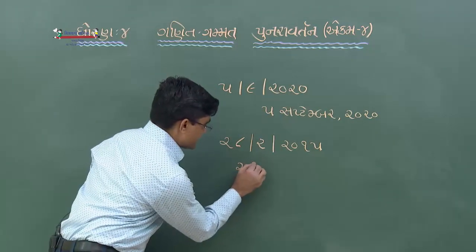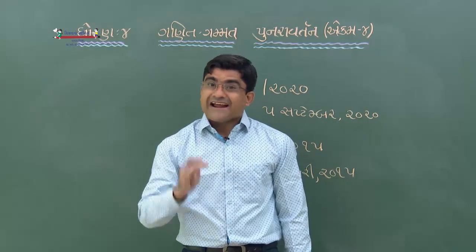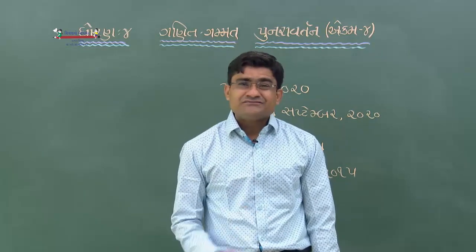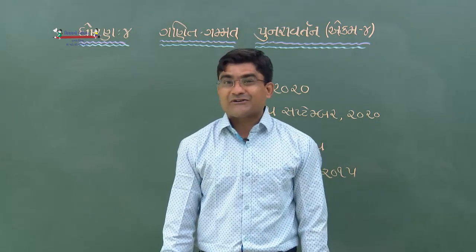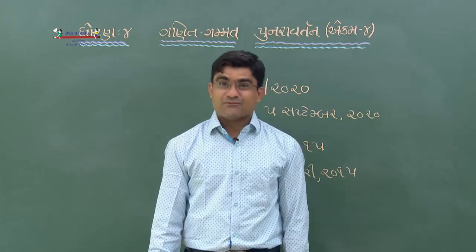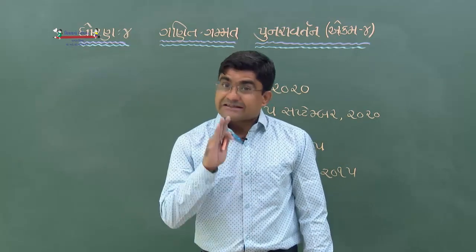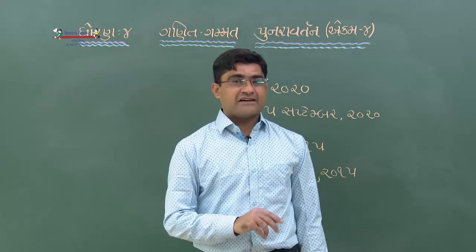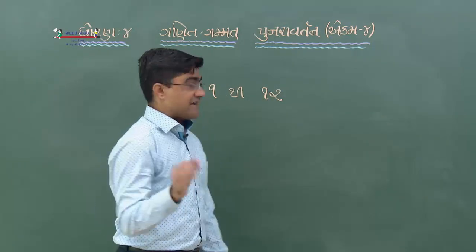28 ફેબ્રુઆરી 2015 - સાબાશ! છેલ્લે, ટપૂ ટ્રેન ચૂક્યો, એ સમય સવારનો હતો. તે રેલ્વે સ્ટેશન પર સાંજે પોંચ્યો, ટ્રેન સવારે ગઈ - કેમ? રેલ્વે ટિકિટ ઘડ્યારમાં 1 થી 12 સૂધીના અંક - ઘડ્યારમાં 24 કલાક.